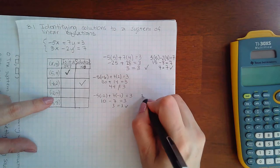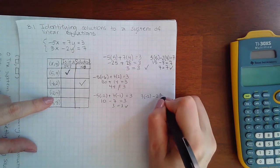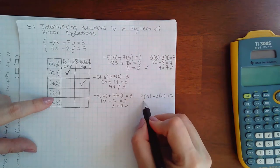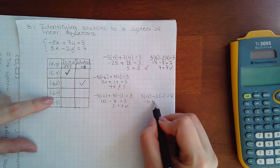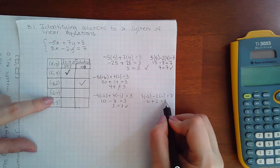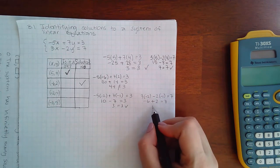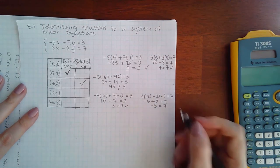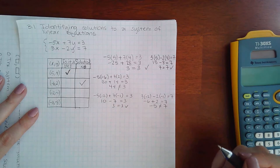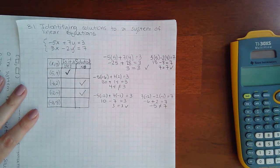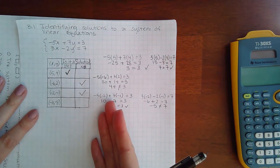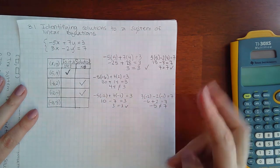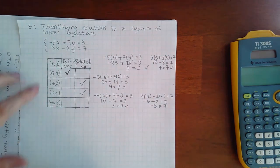Over here I have 3 times negative 2 minus 2 times negative 1 equal to 7, so I end up with negative 6 plus 2 equal to 7. And then if I combine my like terms here, I end up with negative 5 equal to 7, and that is not true. So I would still select no in this box, even though it worked in the first, it didn't work in both, which means the answer to the system is no. System means both.